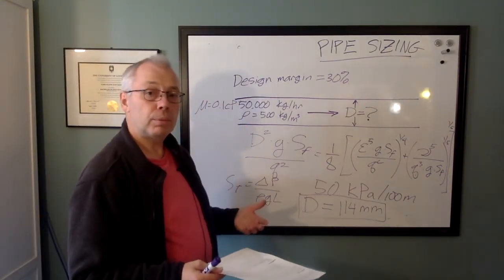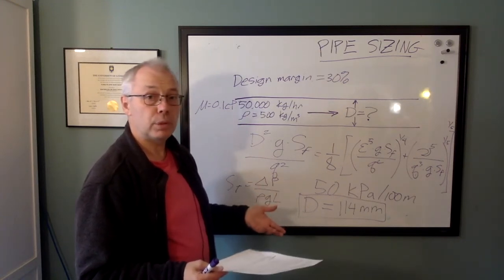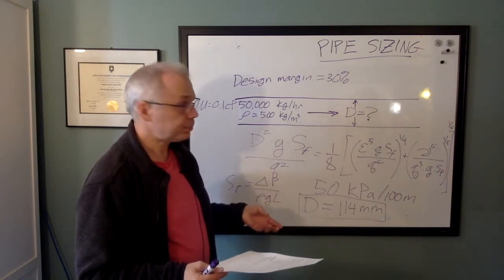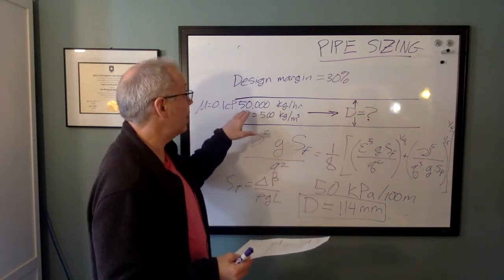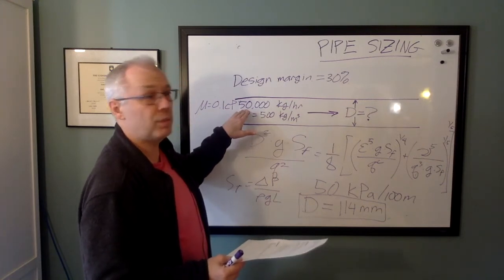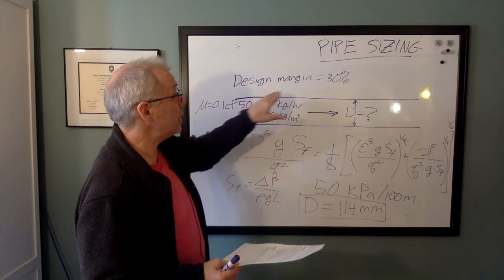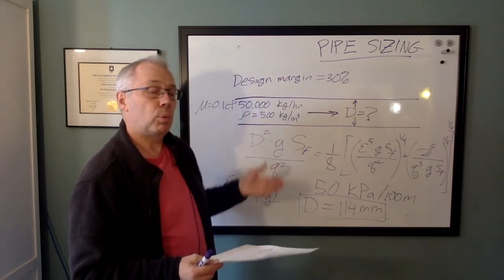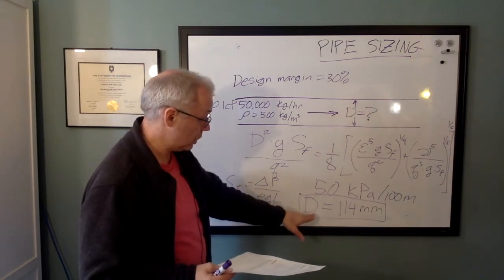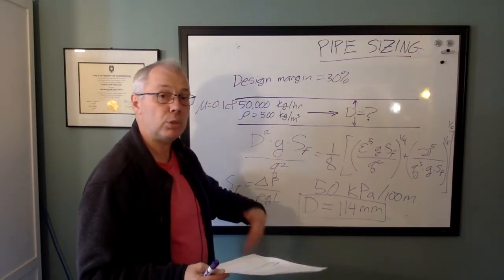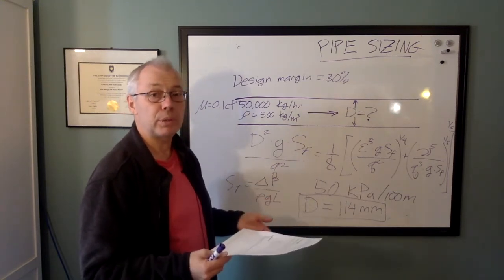And this says that our 4-inch line with an ID of 100 millimeters is too small in this application. It might be okay for the original design if we have only a flow rate of 50,000 kilograms per hour going through it, but our future design case where we need some more flow rate, the 4-inch line isn't good enough, it's not big enough. So that means we need to go up to 114, so we'll go to the next line size. So instead of a 4-inch, that's a 6-inch line, so 150 millimeters ID.